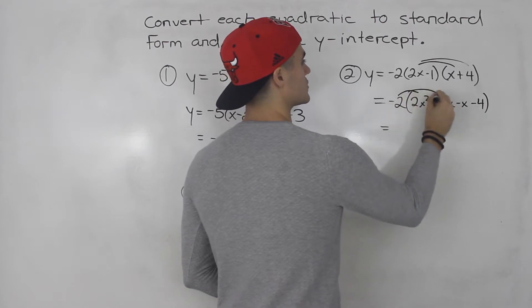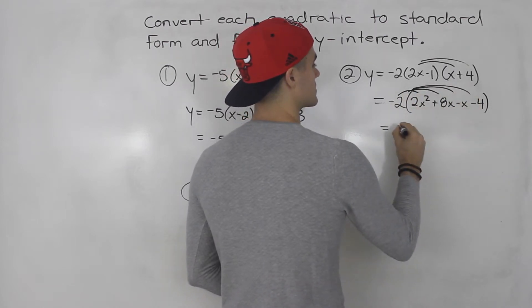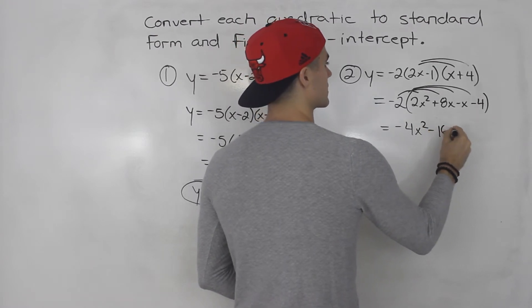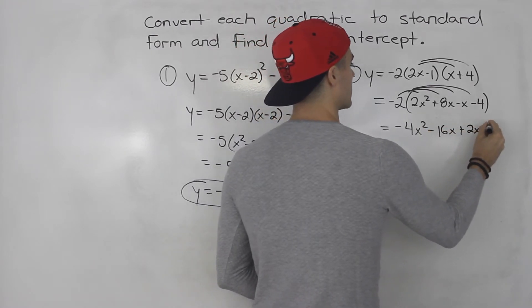And then bring the negative 2 in the bracket. So we'd have negative 4x squared minus 16x plus 2x minus 4.